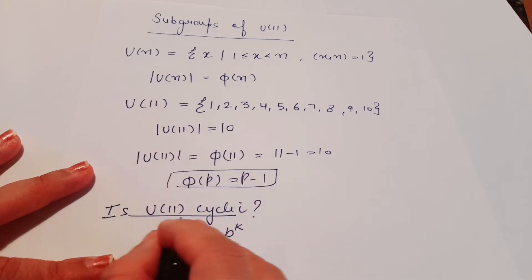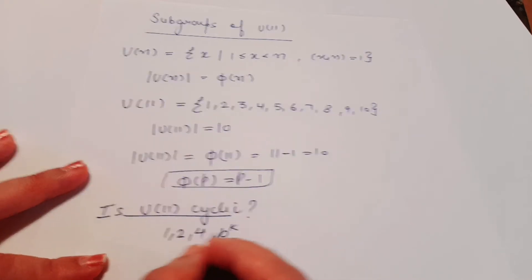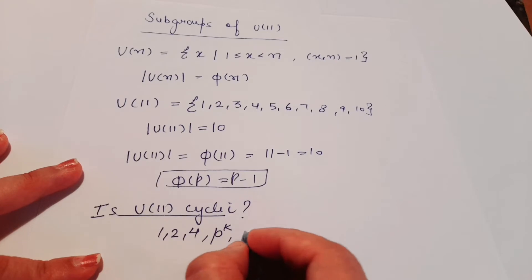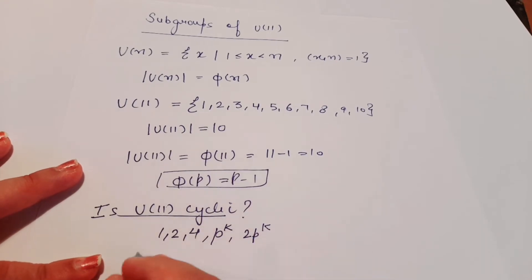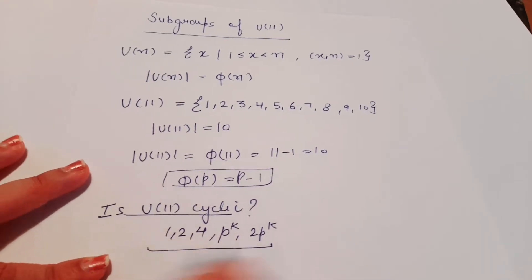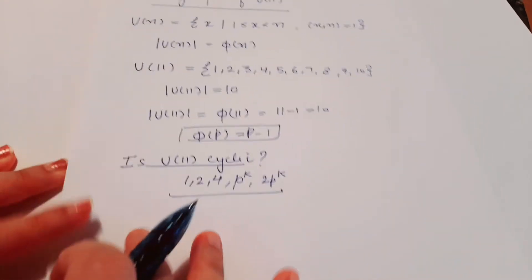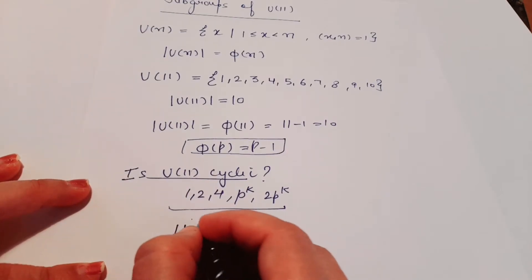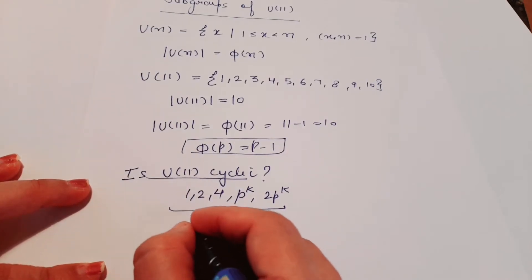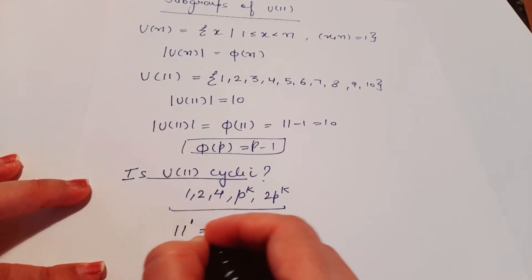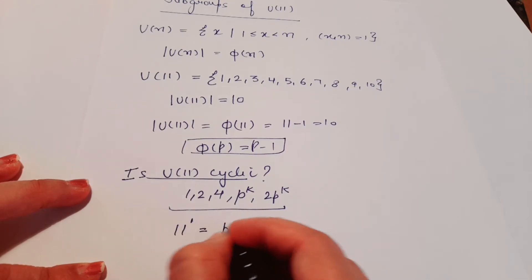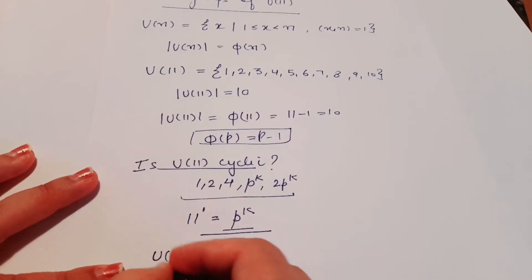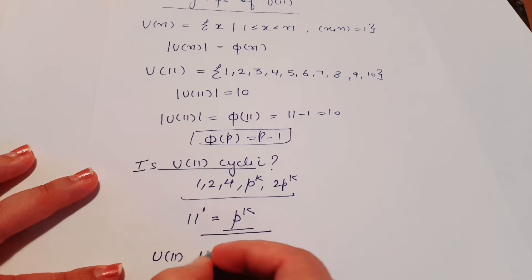We can see that 11 is of the form p^k (specifically 11^1), which means U(11) is cyclic.